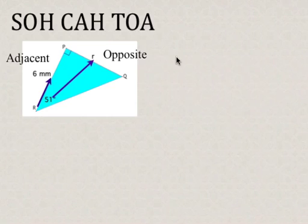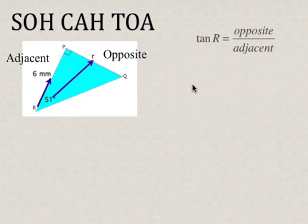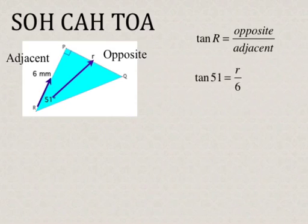So what we're going to use is the trig ratio that has opposite and adjacent, and from SOHCAHTOA, that's our tan ratio. So tan of angle R is equal to opposite over adjacent. Now we're going to sub in the values. Angle R is equal to 51 degrees, we're looking for side r, which is the little r, and our adjacent side is 6 millimeters.